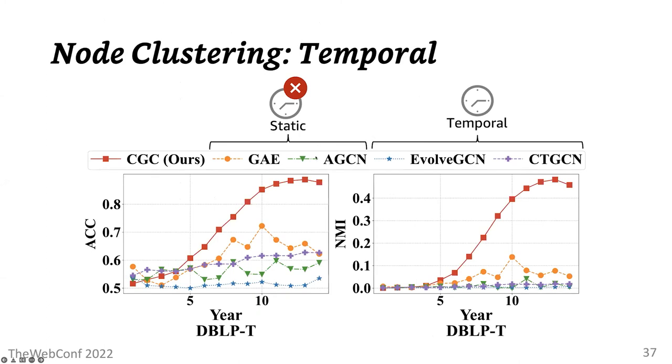This figure shows how accuracy and NMI of these methods change over time. The baseline's performance shows some upward trend, but their improvement is not significant. On the other hand, the CGC's performance remarkably improves over time.